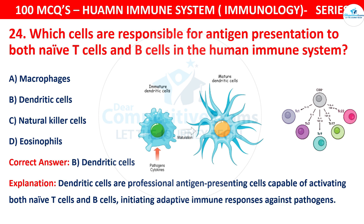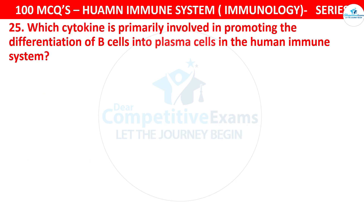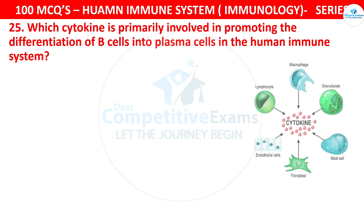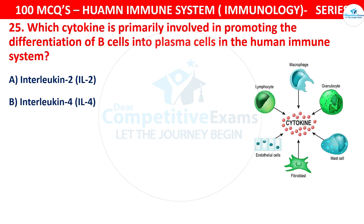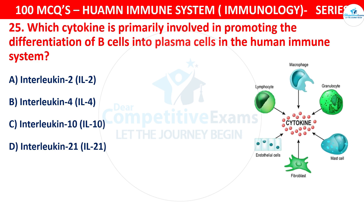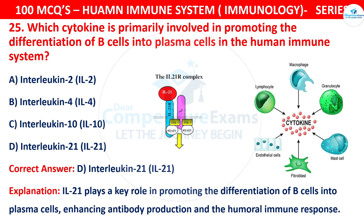Question 25: Which cytokine is primarily involved in promoting the differentiation of B cells into plasma cells in the human immune system? Your options are Interleukin-2, Interleukin-4, Interleukin-10, or Interleukin-21. The correct answer is D, that is Interleukin-21. IL-21 plays a key role in promoting the differentiation of B cells into plasma cells, enhancing antibody production and the humoral immune response.